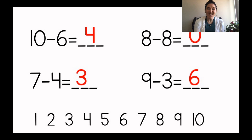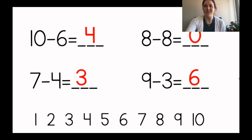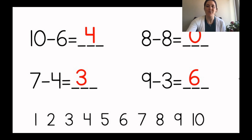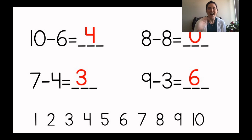Here are the answers to the subtraction number sentences you just solved. Ten minus six equals four. Seven minus four equals three. Eight minus eight equals zero — because you probably crossed all of them off. And nine minus three equals six. If you want to keep solving more subtraction number sentences, there are some in the description section of the YouTube video. Ask your mom or dad to look at the description for more subtraction number sentences to solve. Great job solving these subtraction number sentences today, kindergartners! Bye for now.